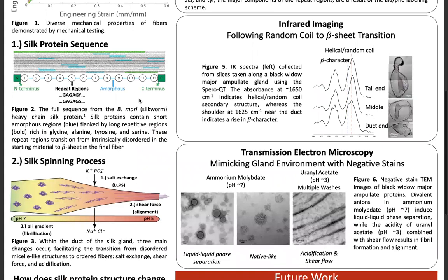Looking at the sequence, you can see that there is this long repeat region which has a lot of glycine and alanine in it, and this is true for both spiders and silkworms. These regions are interesting because inside of the gland they are intrinsically disordered, but in the final fibers they adopt more beta character.